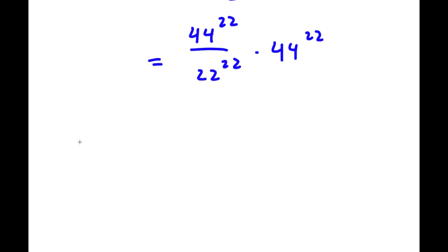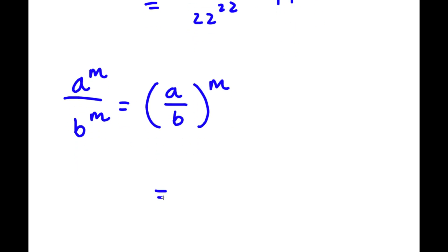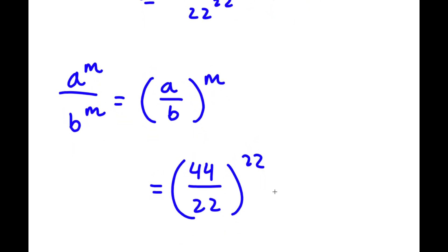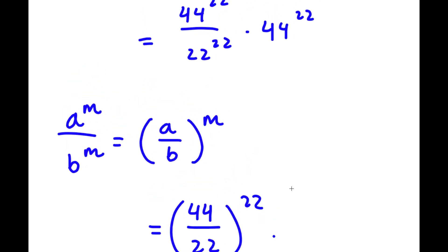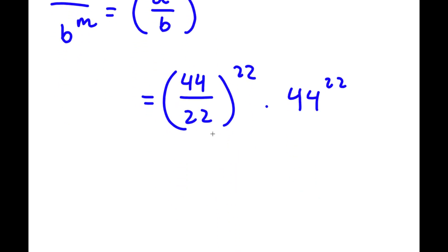If I have something in the form a to the power of m over b to the power of m, this is equal to a over b to the power of m. So in this case, 44 to the power of 22 over 22 to the power of 22 equals 44 over 22 to the power of 22. And now I have this times 44 to the power of 22. Now, 44 over 22 is simply equal to 2.